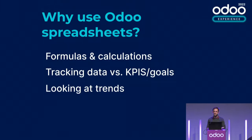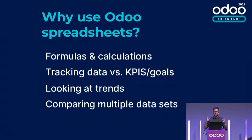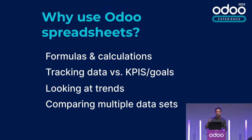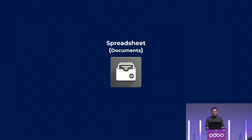You can also look at trends — take the data, extrapolate, forecast, and see where it's going and what the trend line is. A really important capability is comparing multiple data sets, capitalizing on the integration that Odoo brings between all the different apps — for example, taking information from your products and comparing it to information from purchasing or asset tracking. That's where a lot of the real power comes from.